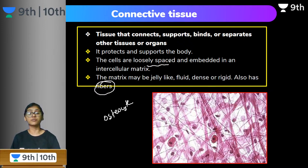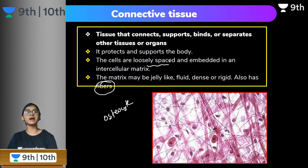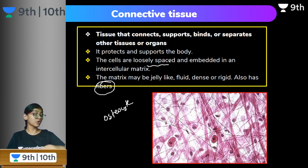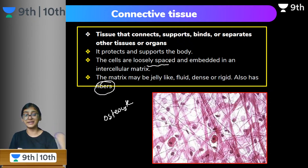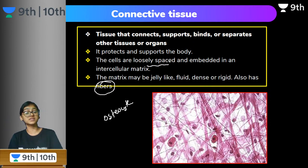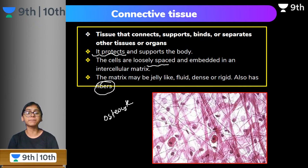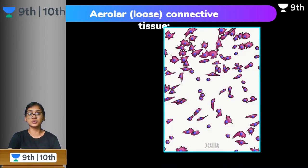Why should one have connective tissue? When you move your hand, it is not just skeletal muscles involved — along with muscle tissue and nerve cells, movement of the hand or any body part also involves connective tissue, which must be present between two organs or tissues. Along with this, connective tissue protects and supports the body. Let's quickly see the types of connective tissue.